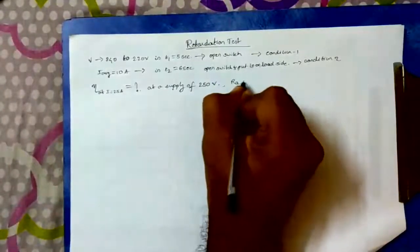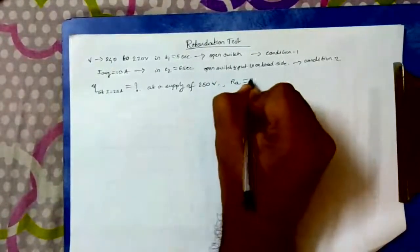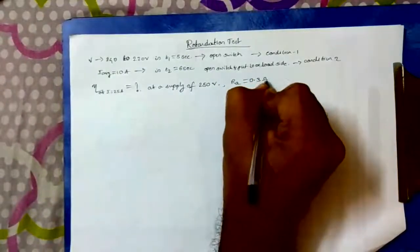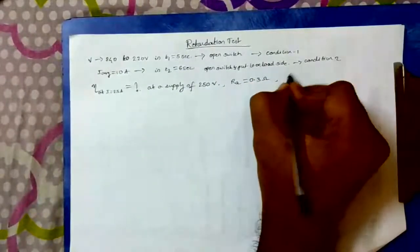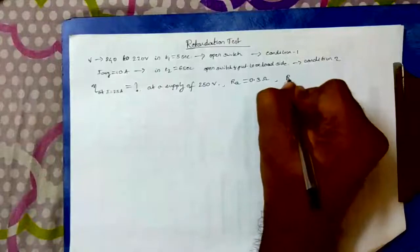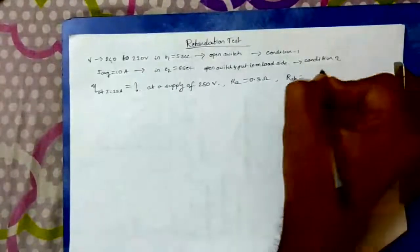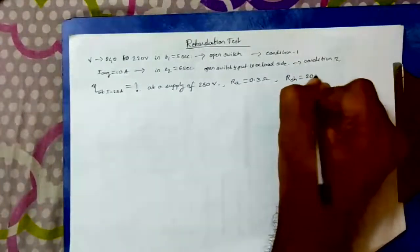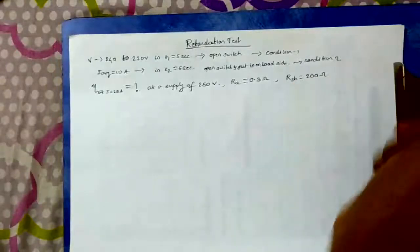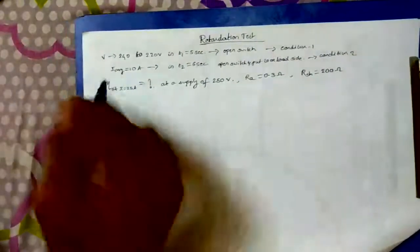At a supply of 250 volt, your armature resistance is given as 0.3 ohm, whereas your field resistance is given as 200 ohm.